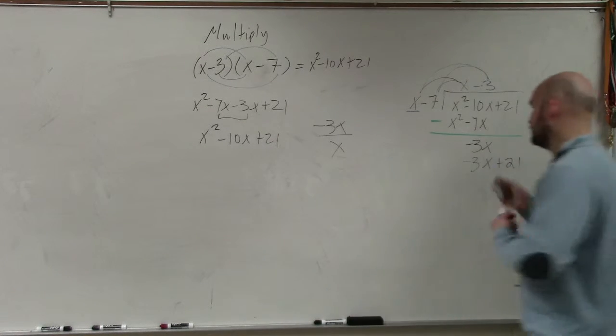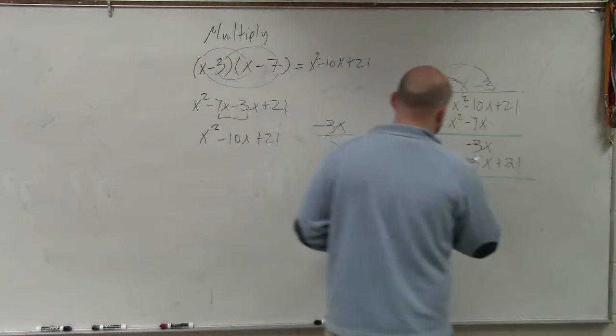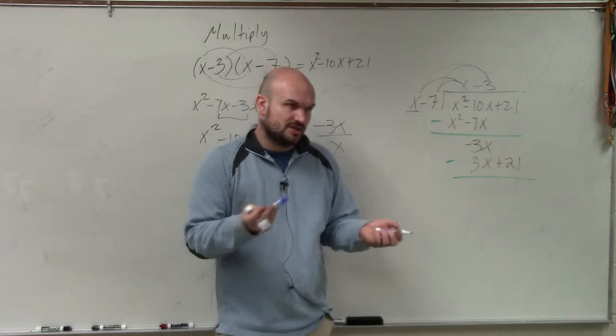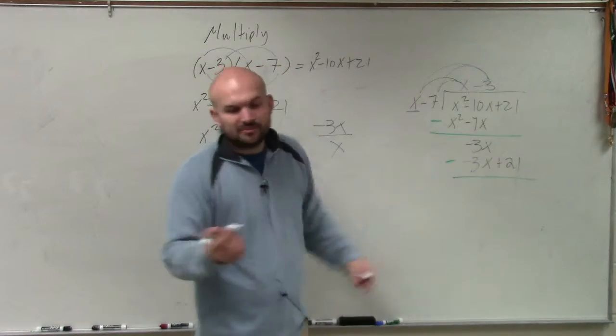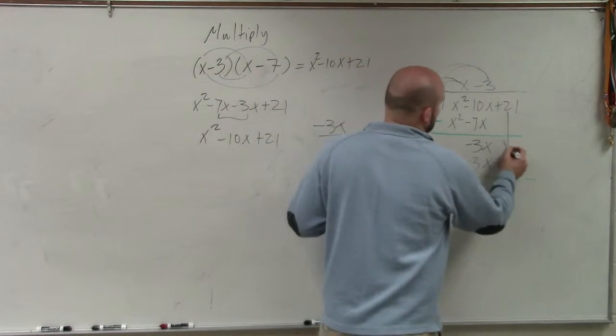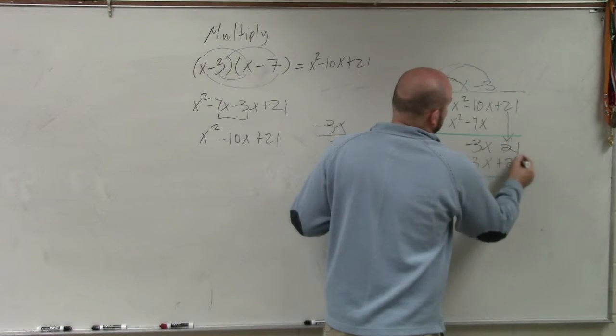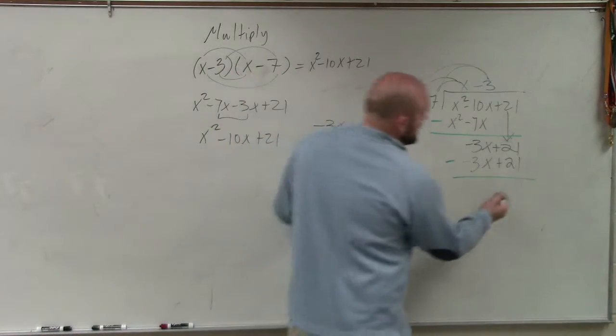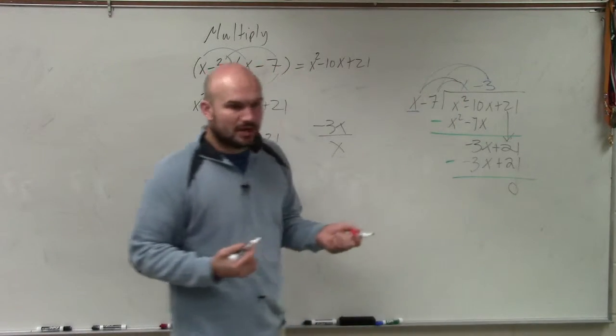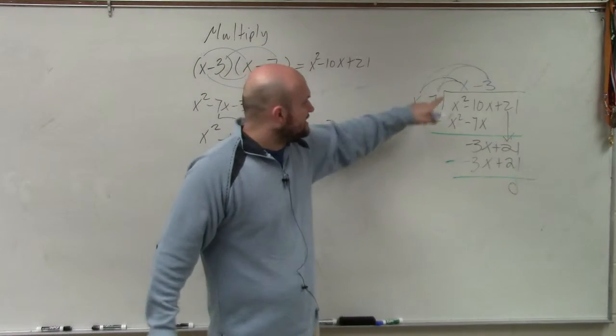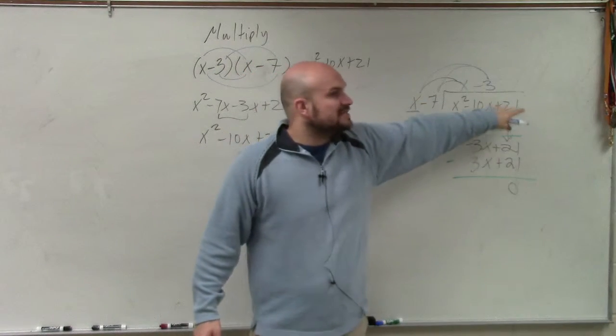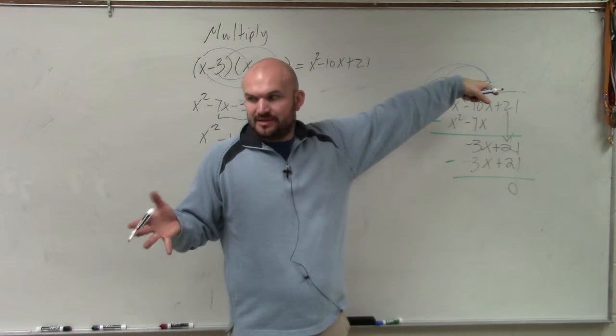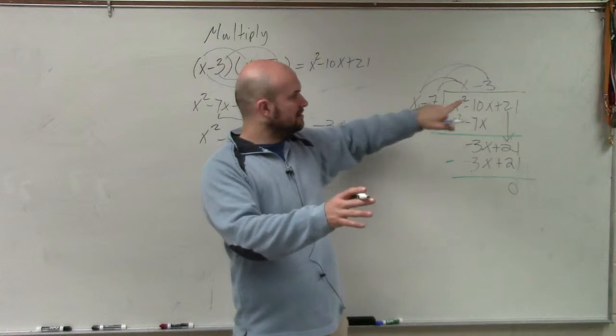Then again, we subtract the rows. Negative 3x minus a negative 3x is going to give you 0x, which is just 0. And then 21, I don't have anything to subtract 21 from, so I'm going to bring down the 21 from up top. 21 minus 21 is 0. And so since my final answer is 0, then that means that x minus 7 divides evenly into this polynomial x minus 3 times. Does that kind of make a little bit of sense? What's the answer? X minus 3.